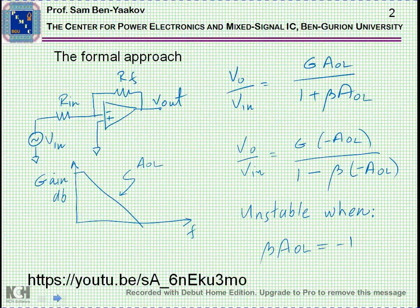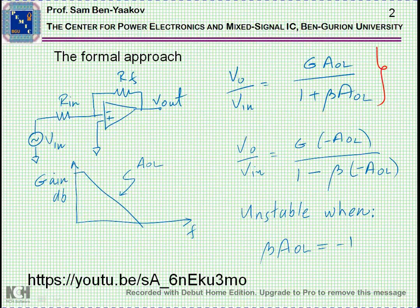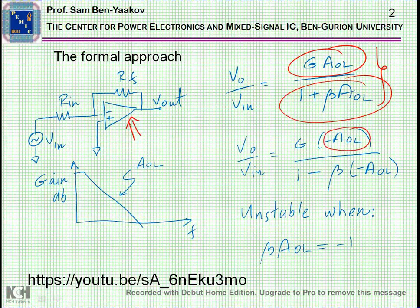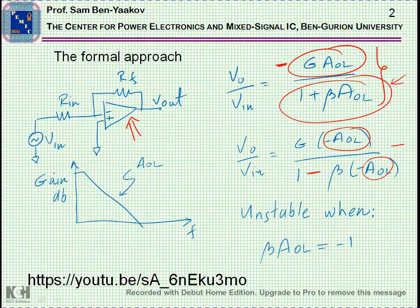Now the formal explanation for instability is really related to the closed loop equation that we have here: G A_OL divided by 1 plus β A_OL. Actually in the case of, let's say, inverting amplifier as shown here, gain is negative, so this should be actually minus. We come to this equation again except that it should include the minus which is of course shown here.